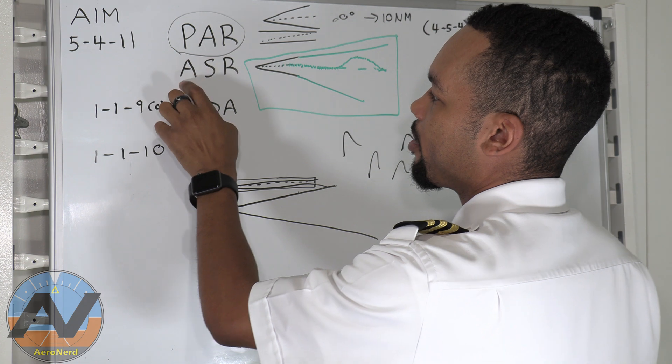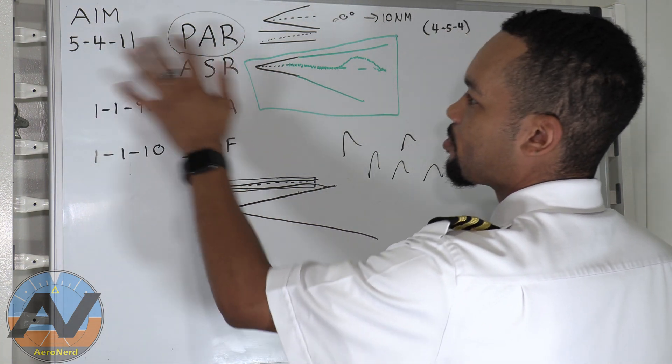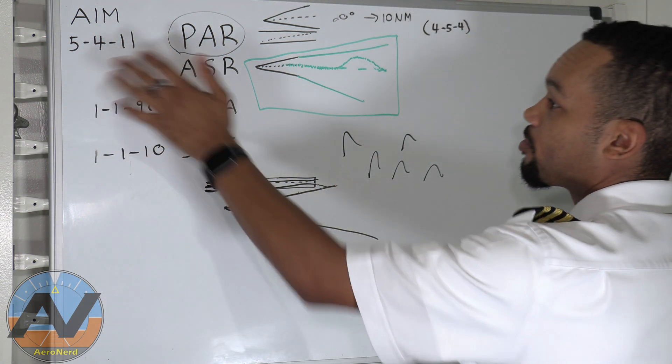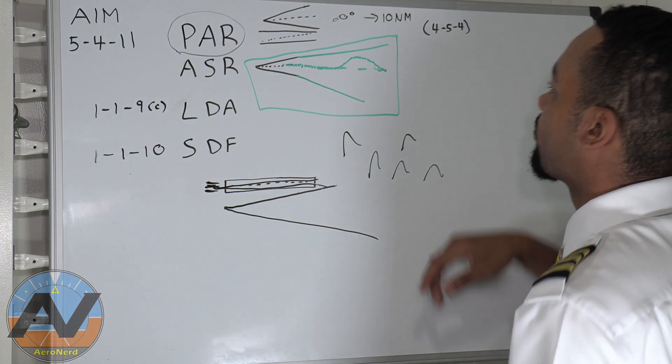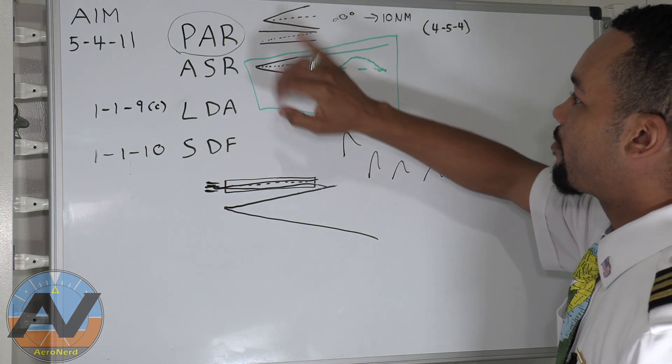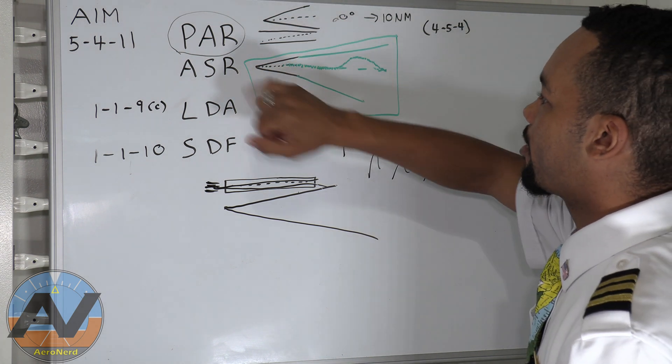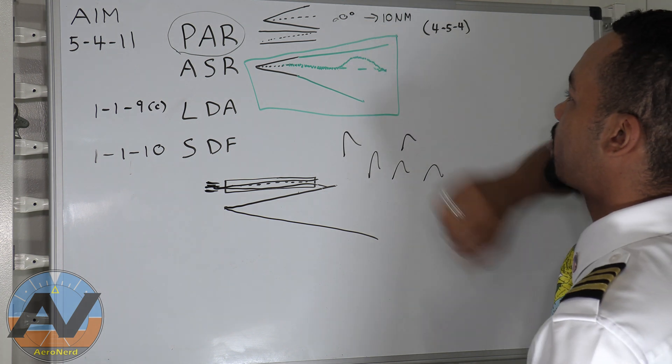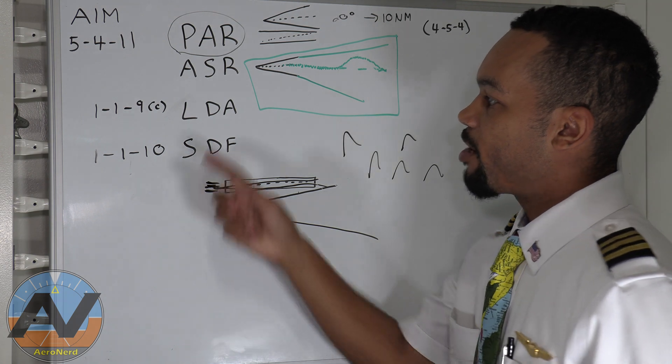Now, that's precision approach radar and approach surveillance radar. Now, the guidance for these two, you'll find it at 5-4-11 on the 2020 AIM, and also, the information is kind of scattered throughout the AIM as well. For example, you'll see the dimensions of the PAR systems. It has a 20-degree azimuth, and it goes out to 10 nautical miles. So you can find that at 4-5-4.